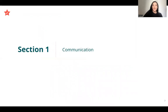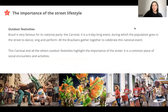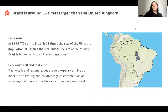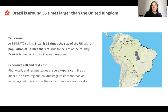So about communication. In Brazil, it's a huge country — around 35 times larger than the United Kingdom. It's a very, very big country, and it's so important that there are four different time zones. From east to west, there are two hours difference. Also, what is interesting is that calling or sending messages can be very expensive, so they have different tariff plans.